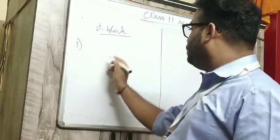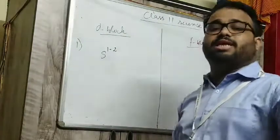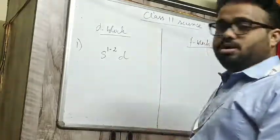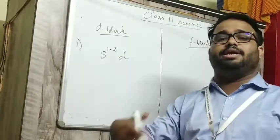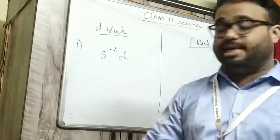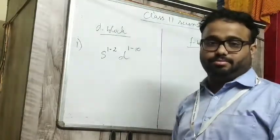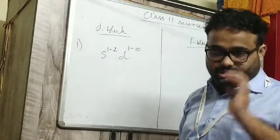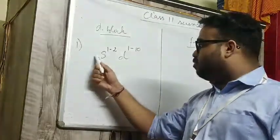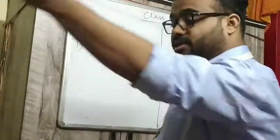After that comes d. Now d configurations can be d1, d2, d3, d4, d5, d6, d7, d8, d9, d10. So d can be from 1 to 10.